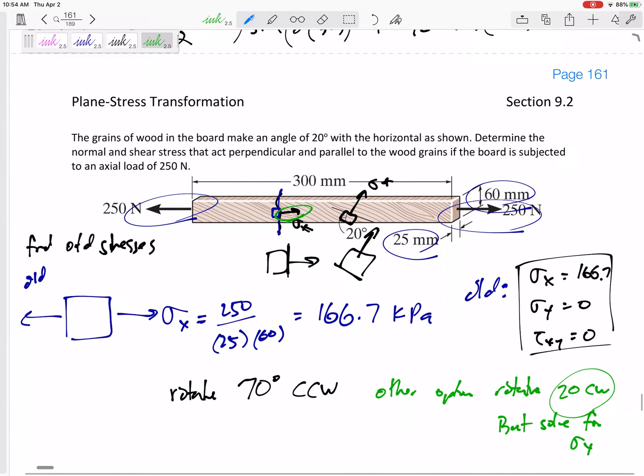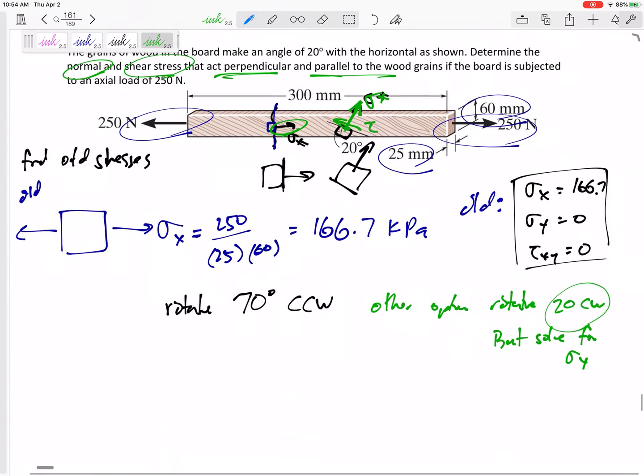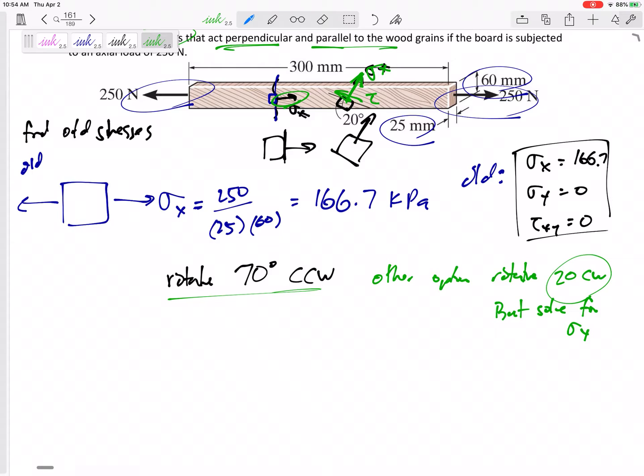My other option would be to rotate it 20 degrees clockwise, but I'd have to be careful. I would have to solve for sigma Y, not sigma X, because it would be a new face. If we want to find this stress - let me back up a little bit here - we want to find the normal and shear stress perpendicular and parallel to the wood grain. So we want to find this stress I'm calling sigma X right here, and we want to find this tau.